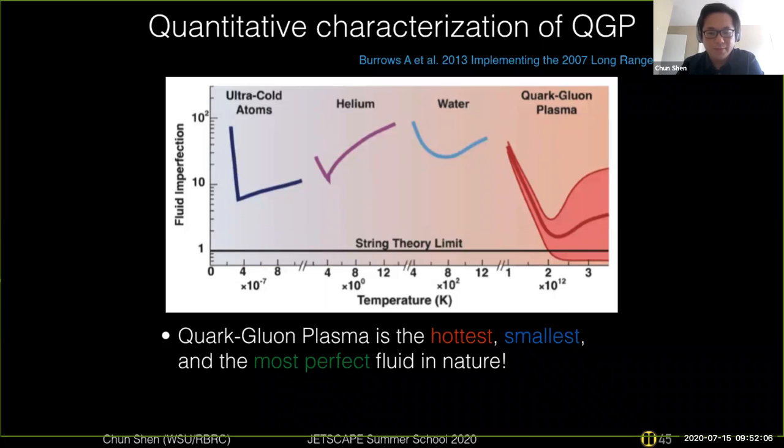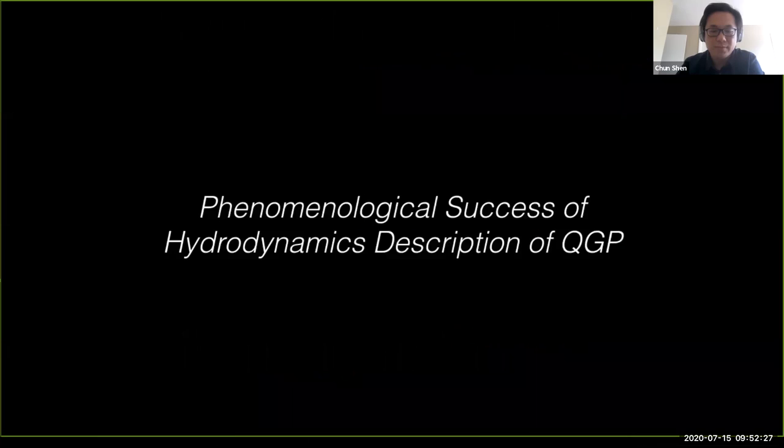And this means that the quark-gluon plasma is actually very hot because it's sitting at hot temperatures around trillion degrees, and also very small because it's only existing at the size of the nucleus, and it's very nearly a perfect fluid in nature because it has very small shear viscosity to entropy ratio. So lastly, let me just highlight a few successes.